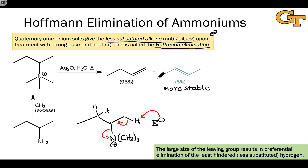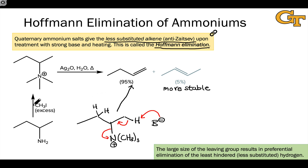Hofmann elimination is contrasted with Zaitsev-type eliminations and is a nice way to make the less substituted alkene. These trimethylammonium salts, the starting materials for Hofmann elimination, can be generated by alkylation of a primary amine with excess methyl iodide or methyl bromide.